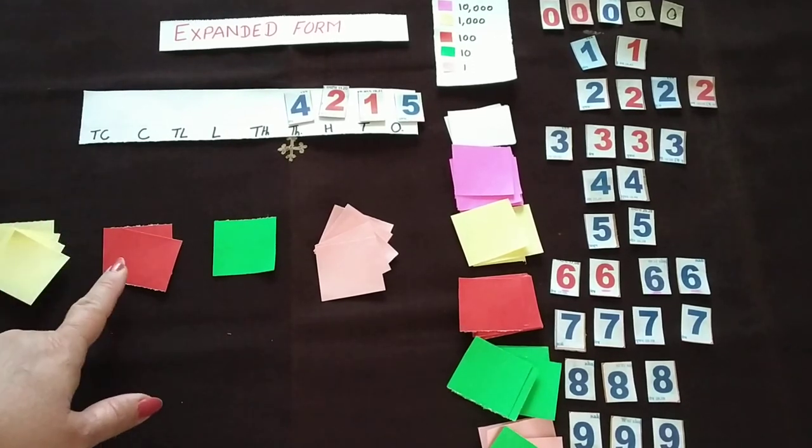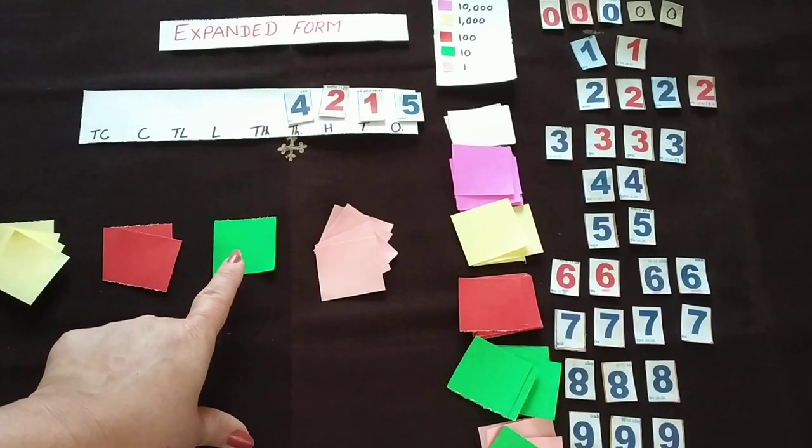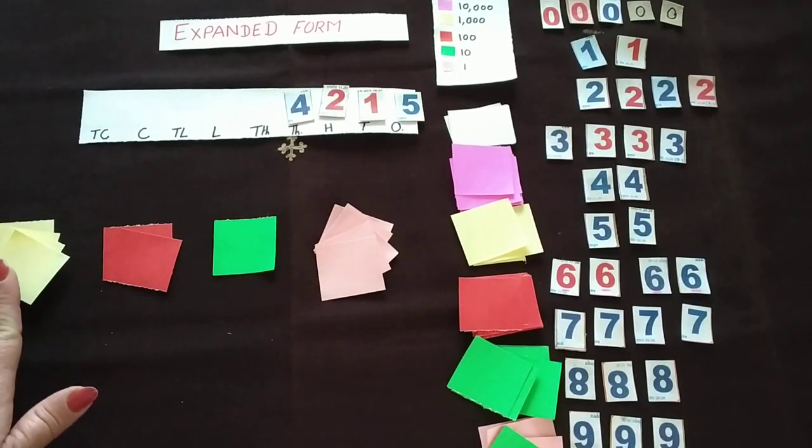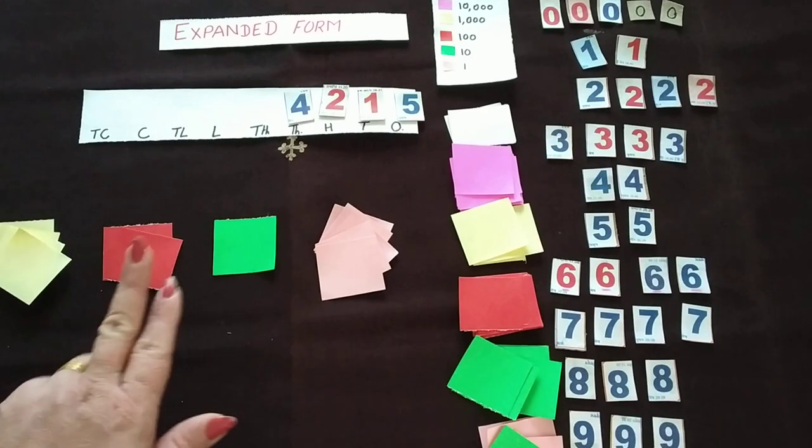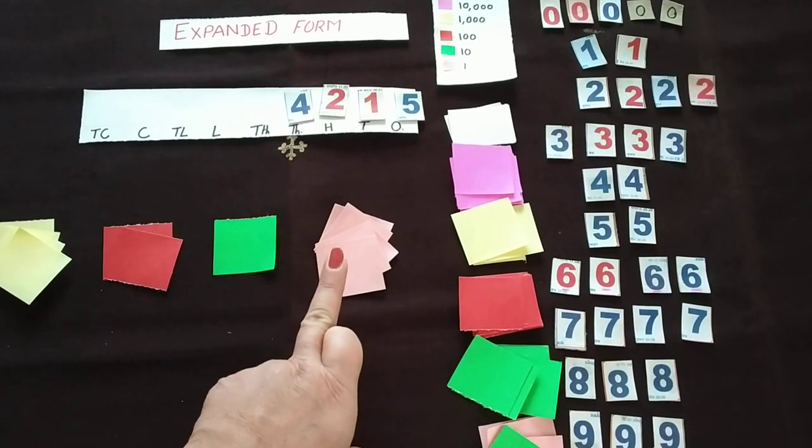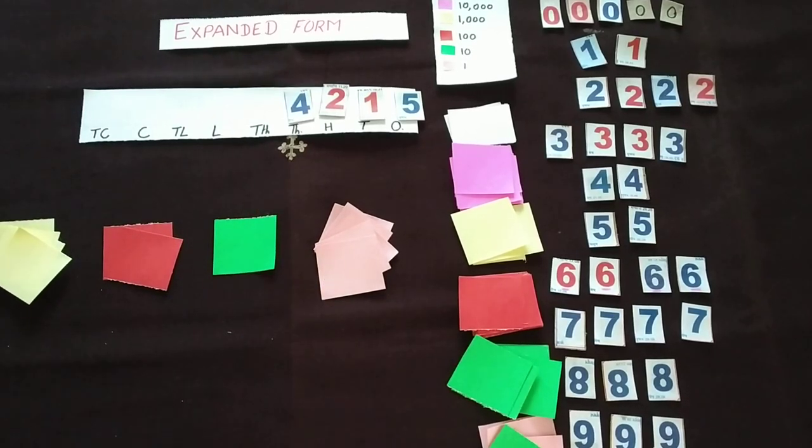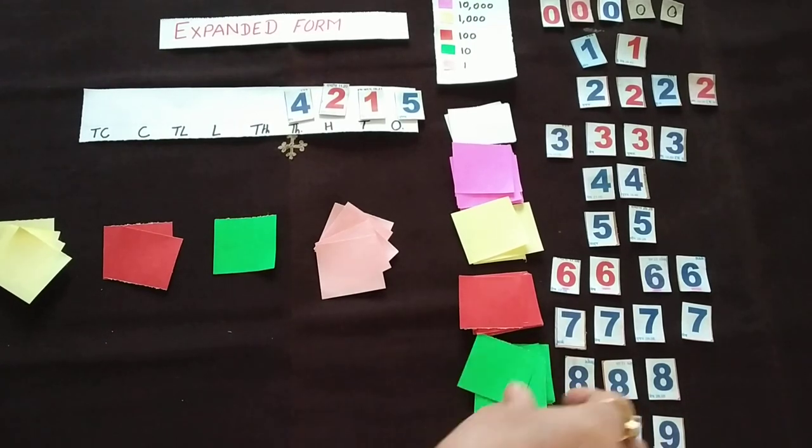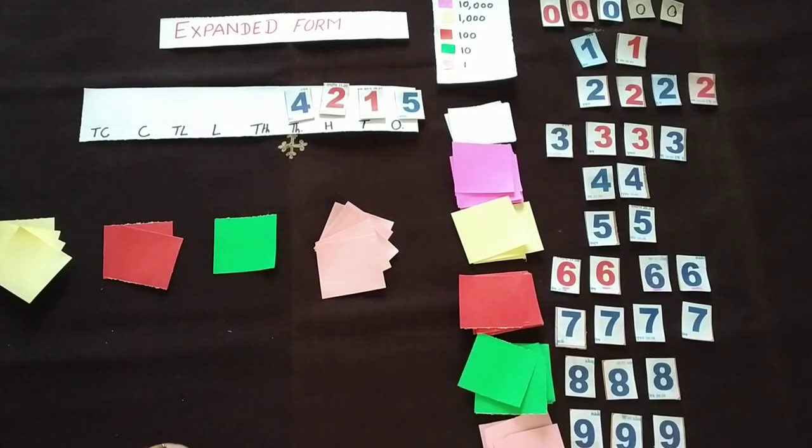So 4000, 200, 10, and 5. So it means 4 into 1000, 2 into 100, 1 into 10, 5 into 1. So this way you can change the numbers and accordingly the child will collect the sheets and complete the activity.